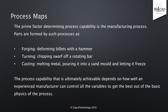The prime factor determining the process capability is the manufacturing process. Parts are formed by process families such as forming. Forging is hitting parts with a hammer to deform them plastically into shape. Machining — turning is cutting pieces of swarf away from a rotating bar. Casting or moulding involves melting the material, pouring it into a mould and letting it refreeze. The point is that these processes essentially come down to physics, and the process capability ultimately achievable depends on how well an experienced manufacturer can control all the variables to get the best out of the basic physics of the process.